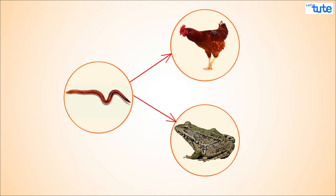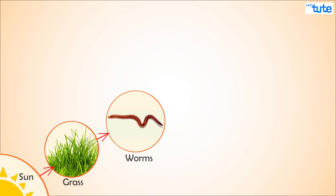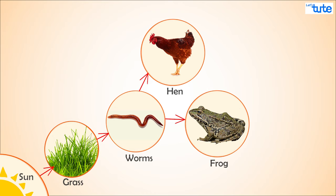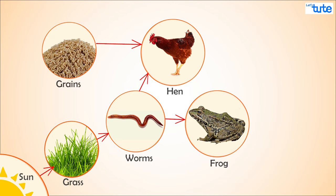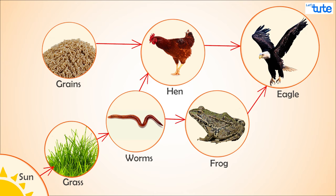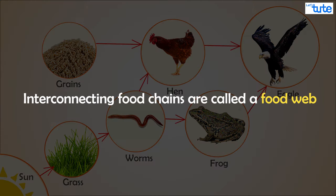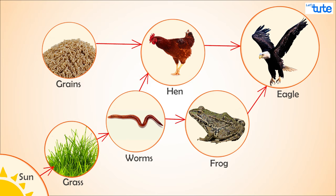One organism can be food for many. Let's understand this: many worms feed on the same grass, the worms are eaten by frogs and hens. If you carefully notice, the hen feeds on grains too. Both the frog and hen are eaten by the eagle. Here, multiple food chains are formed, and these interconnecting food chains are called a food web.